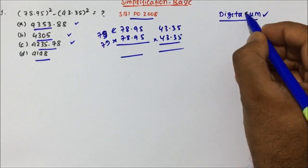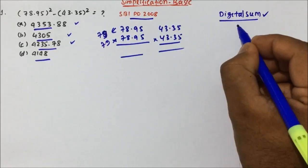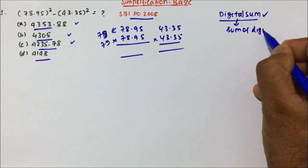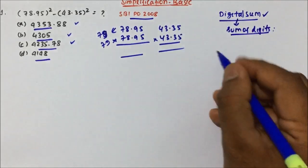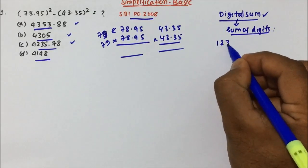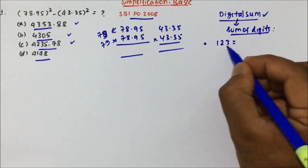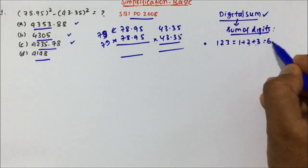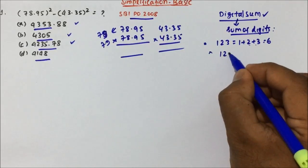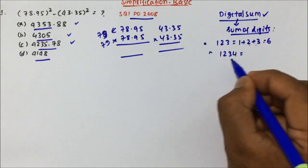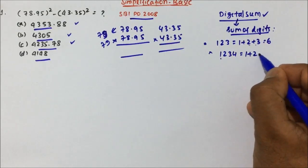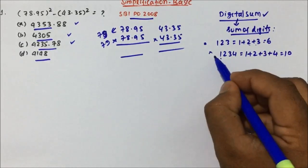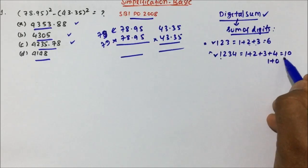Before that we have to understand what is digital sum. The name itself says it is sum of digits — digital sum is nothing but sum of digits. Suppose you have a number 123 and somebody asks you the digital sum: 1 plus 2 is 3, and 3 plus 3 is 6. So digital sum of 123 is 6. For 1234: 1 plus 2 is 3, 3 plus 3 is 6, and 6 plus 4 is 10. In digital sum we have to keep adding till we get a single digit.